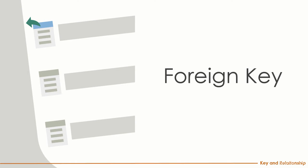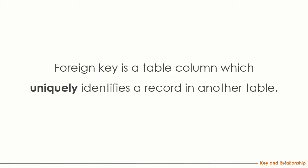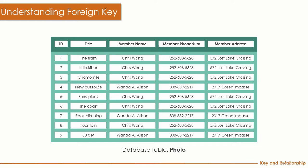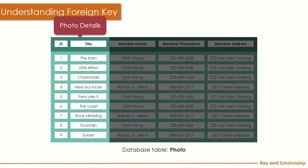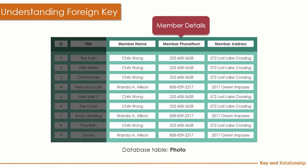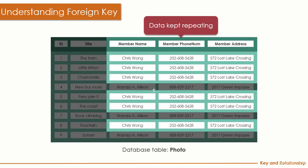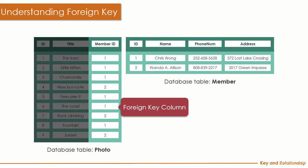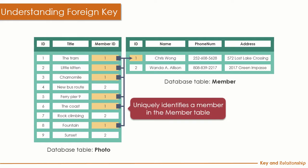After the primary key, let's talk about the foreign key. A foreign key is a table column used to identify a record in another table. In our photo detail table — with ID and title — we found that uploader member details kept repeating, so we split into two tables: photo with ID and title, and member with name, phone number, and address. We then introduce a foreign key column called member ID in the photo table to link to and uniquely identify the member in the member table.